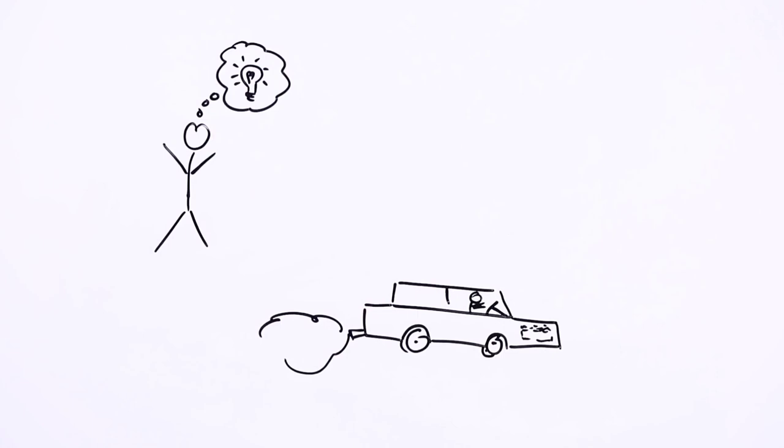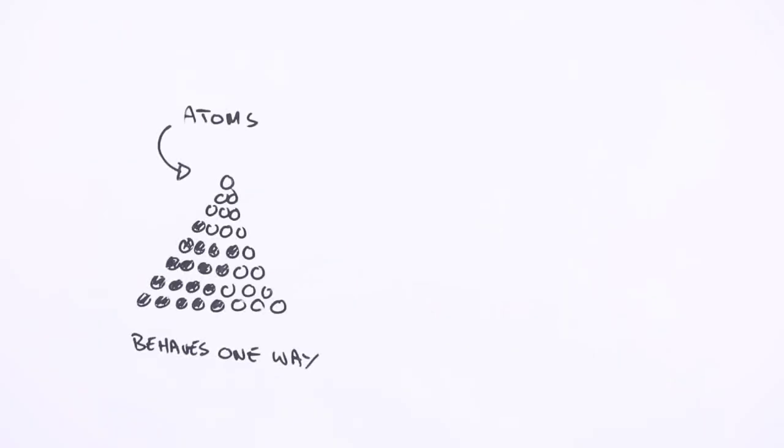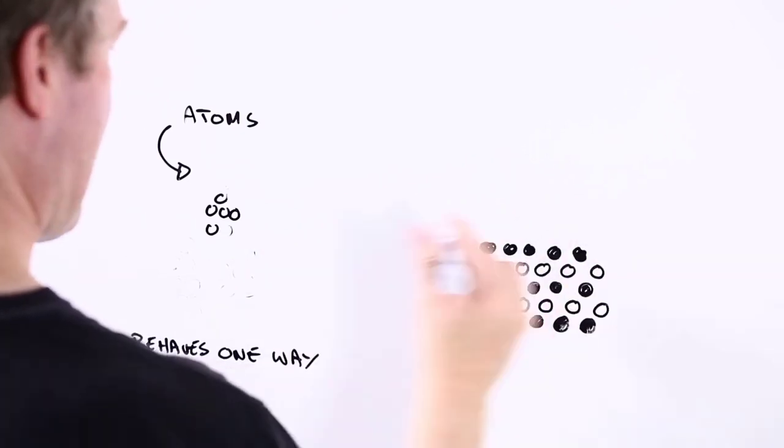Of course, atoms are a bit smaller than the wheels on a car, but the same idea holds. How the different atoms in something are arranged can affect things like how strong or how weak it is, or if it conducts electricity, or if you can see through it.